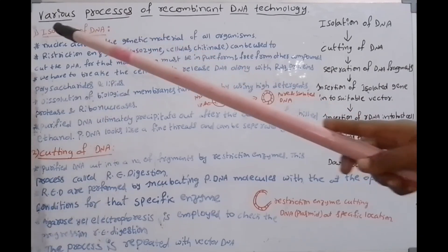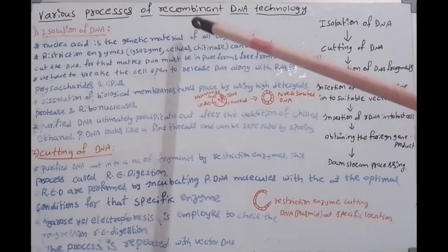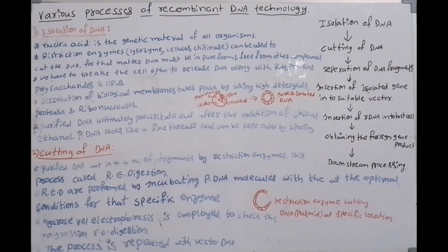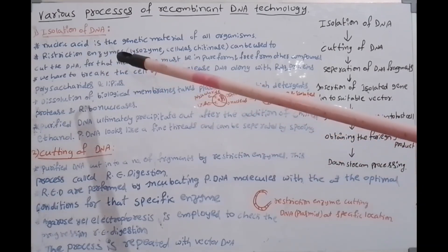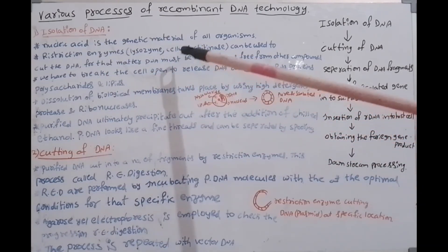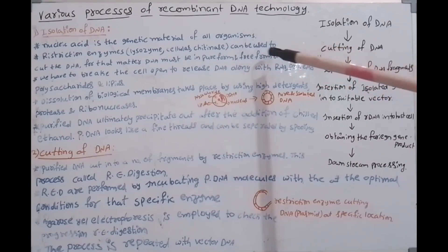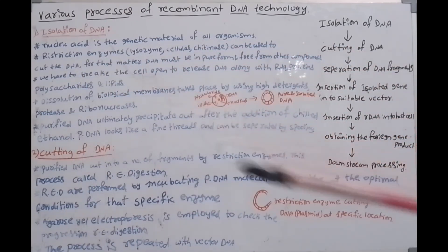Isolation of DNA — the first step. Nucleic acid is the genetic material of all organisms. Each cell is made up of DNA, and this is the main genetic material in the cell. Restriction enzymes like lysosyme, cellulase, and chitinase are used to cut the DNA into fragments.